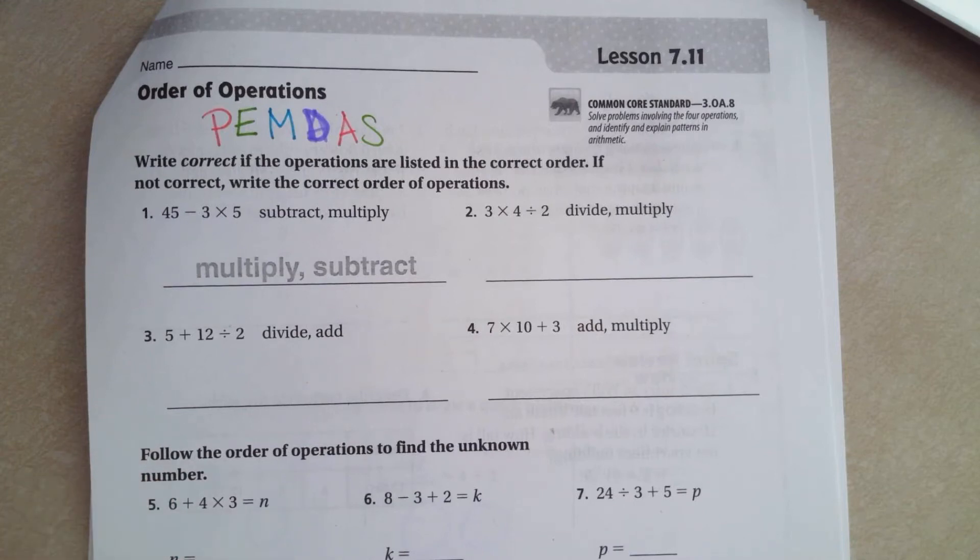Hey guys, welcome to third grade chapter 7 lesson 11. We are going to be working on the order of operations today. So we are going to be writing down if the order of operations is written correctly in the right order, or if we need to move things around. If it's correct we're just going to write correct. If it's not we're going to write it in the right order.